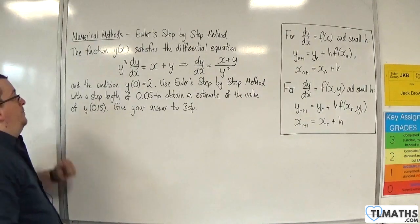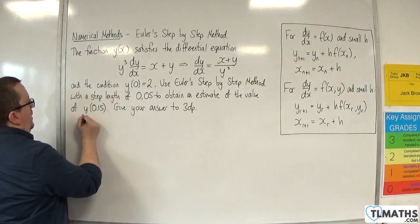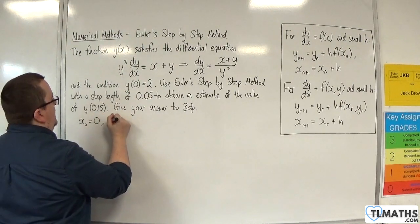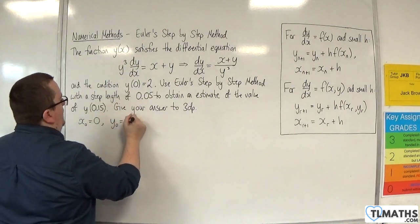Okay, so from here we know that x₀ is 0, so the initial value of x is 0, and the initial value of y, so y₀ is 2.